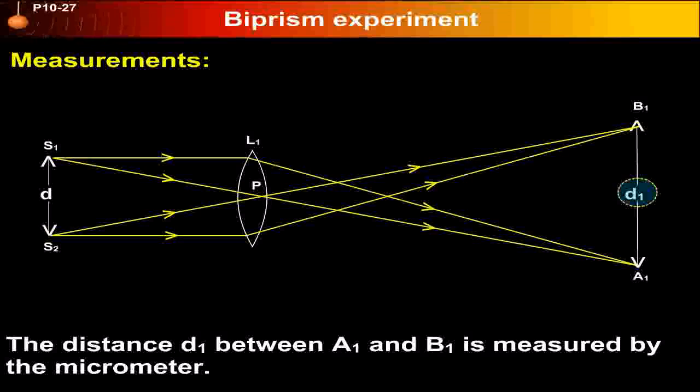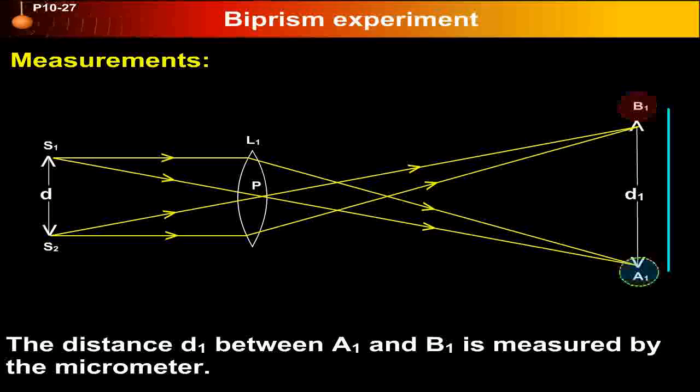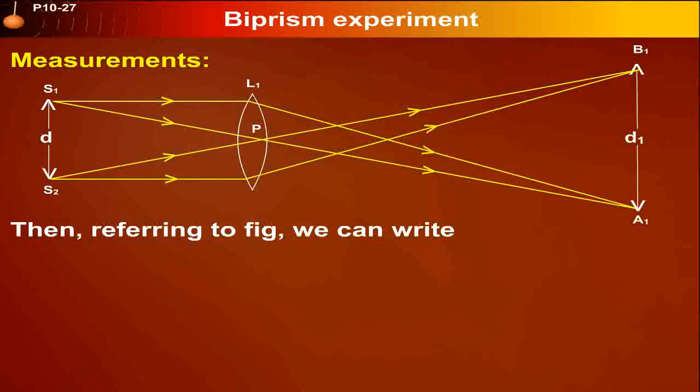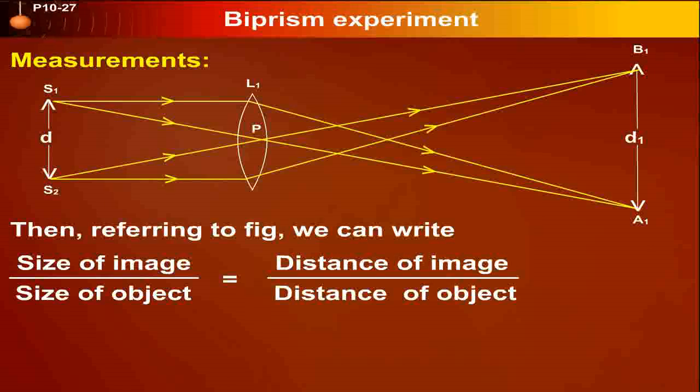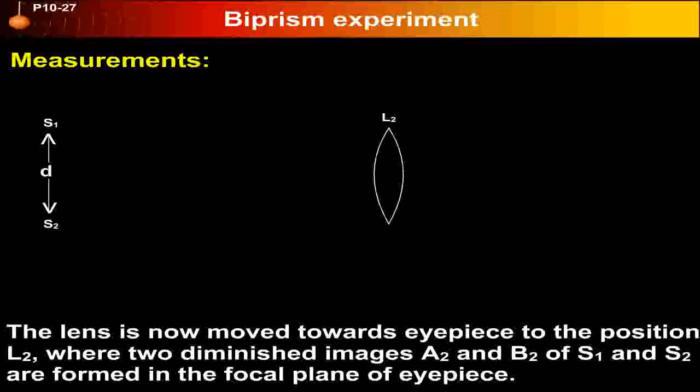The distance small d1 between A1 and B1 is measured by the micrometer. Then referring to this figure, we can write: size of image upon size of object equals distance of image upon distance of object. Therefore, small d1 upon small d equals v upon u.